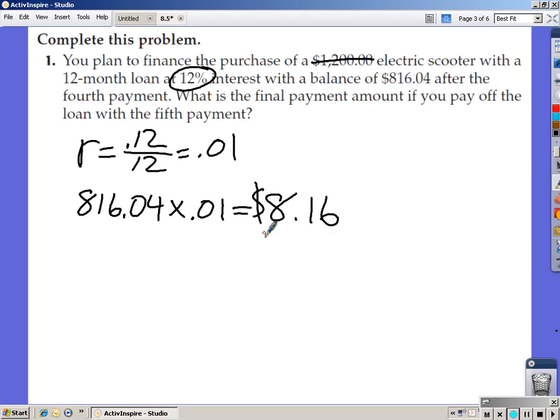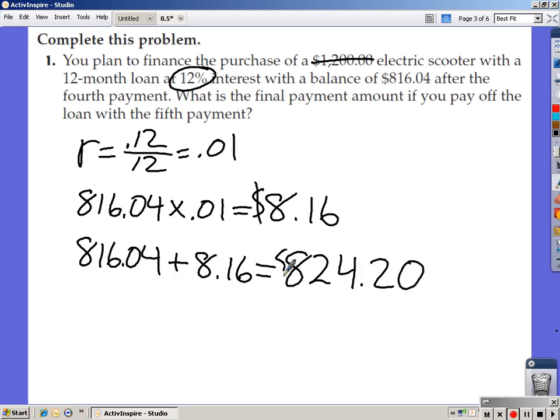Now, to find the final payment amount, you take the current balance of 816.04, you add your interest of 8.16. You should come up with 824.20. 824.20 is what you would pay in your final payment in order to complete this loan, get it completely paid off.